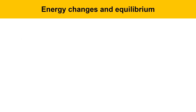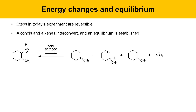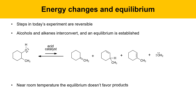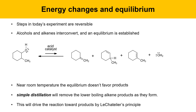Alcohols and alkenes interconvert in the presence of acid, and an equilibrium is established. Near room temperature, the equilibrium doesn't strongly favor the alkene products, so we need to promote product formation. We'll use a simple distillation to remove the lower-boiling alkene products as they form, driving the reaction toward products by Le Chatelier's principle. This works because the product alkenes boil lower than the starting materials.